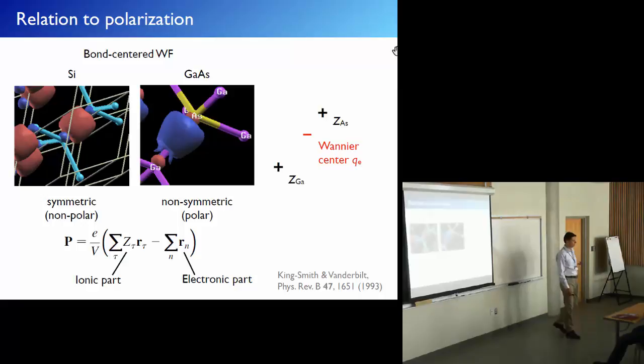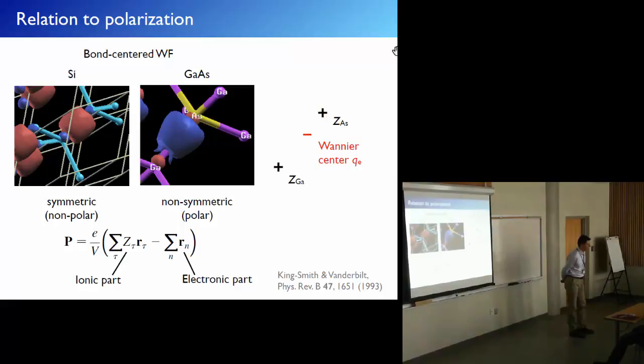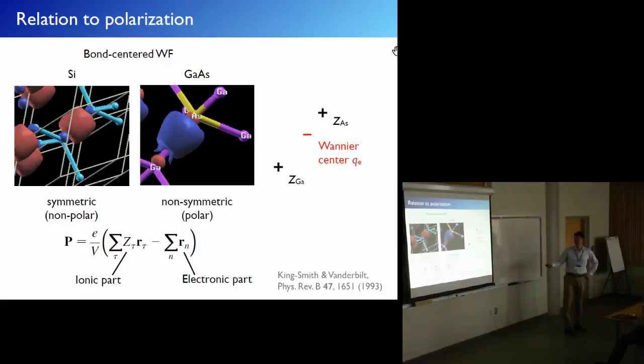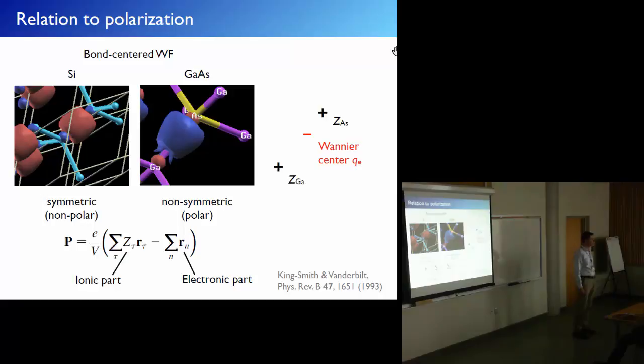Are there any questions to the first part? [Question about RMT spheres.] There is no direct relation to the RMT spheres. The Wannier functions can go outside the RMT spheres — they don't have to be confined within the spheres unlike the core electrons in WIEN2k calculations. There is no requirement for confinement. For example, the Wannier function center can be located right between two atoms, outside the spheres.